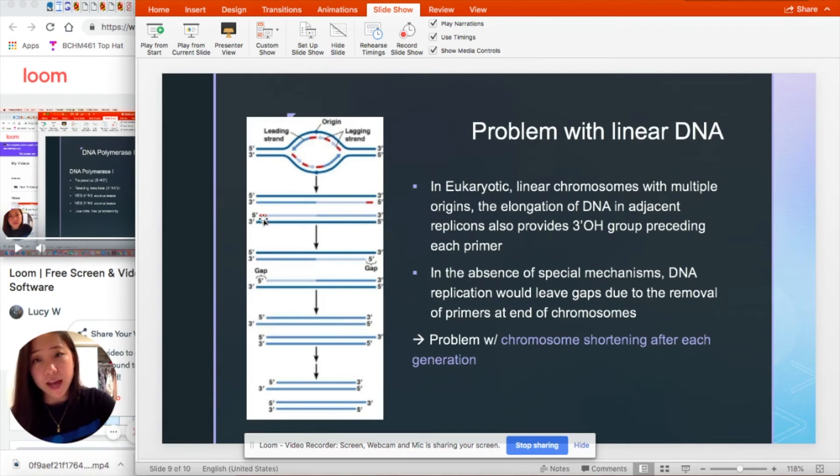And once this primer gets removed, we are left with a gap. And there is a problem because the chromosome will keep shortening after each generation.